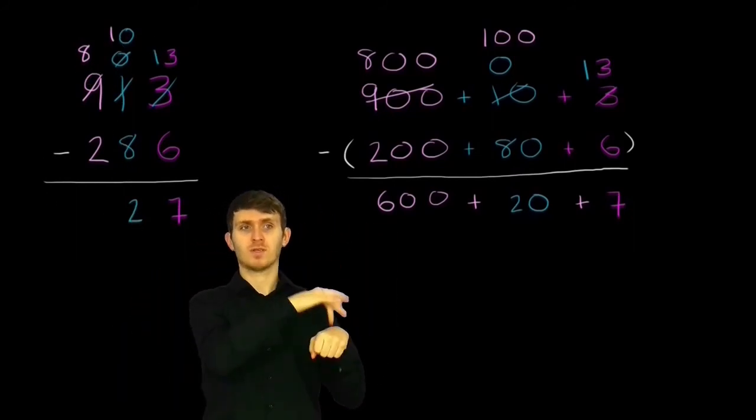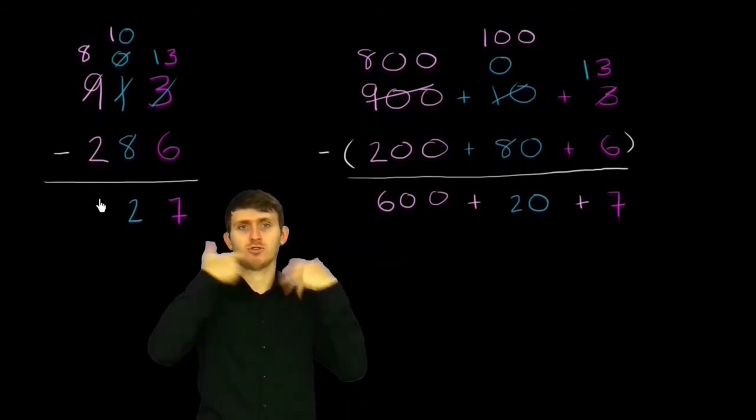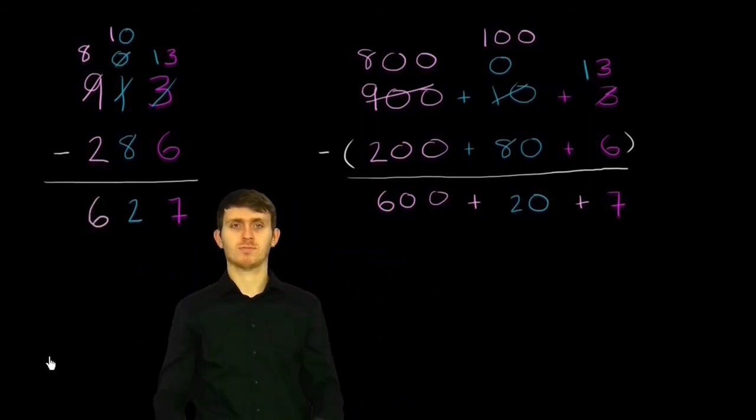And then finally, we have 800 minus 200 to get 600. 627.